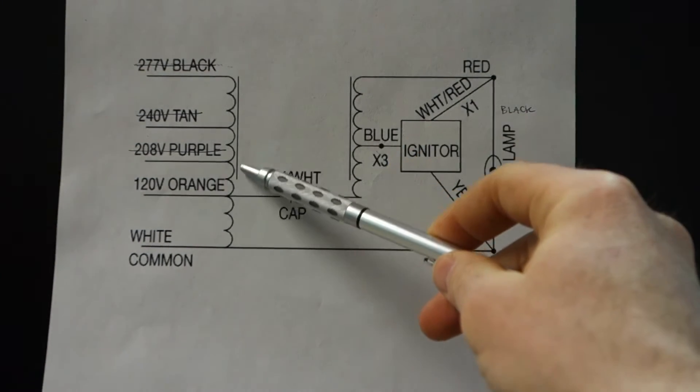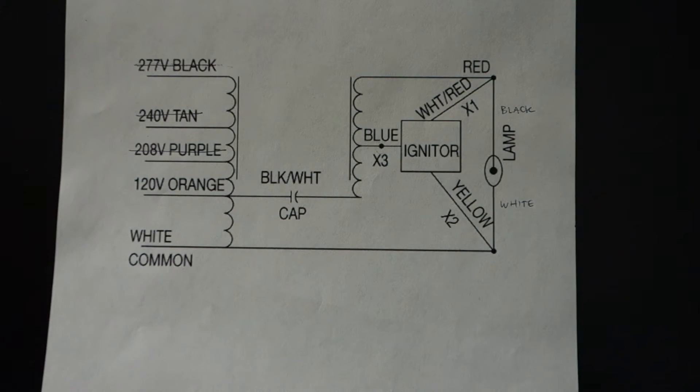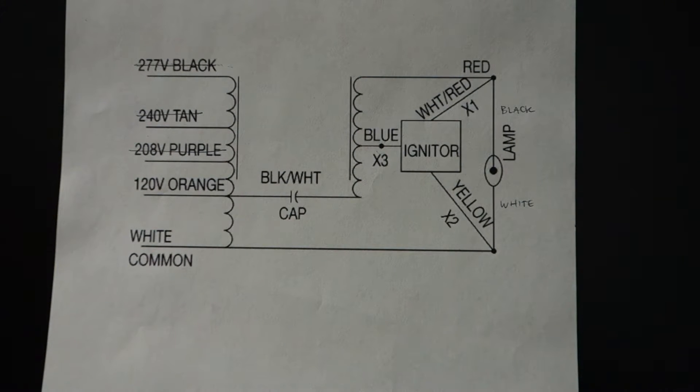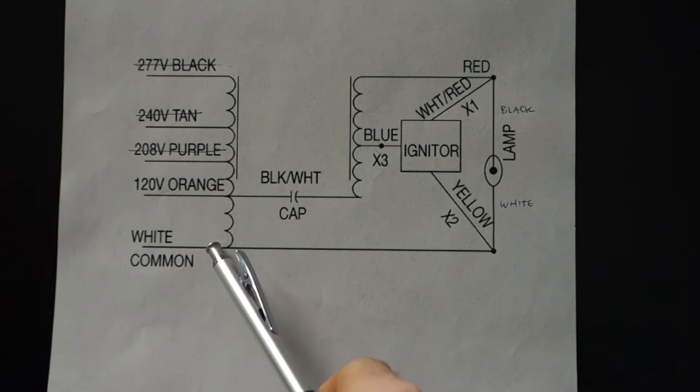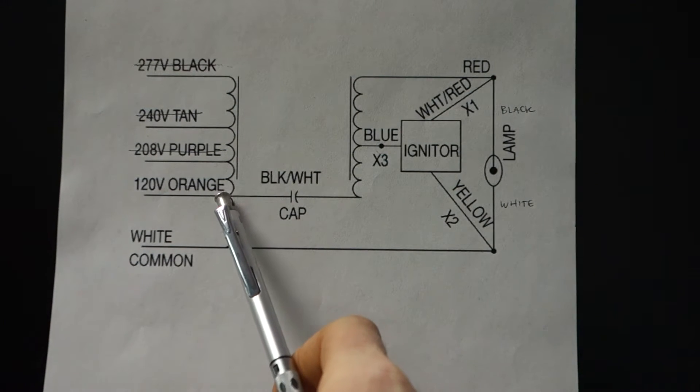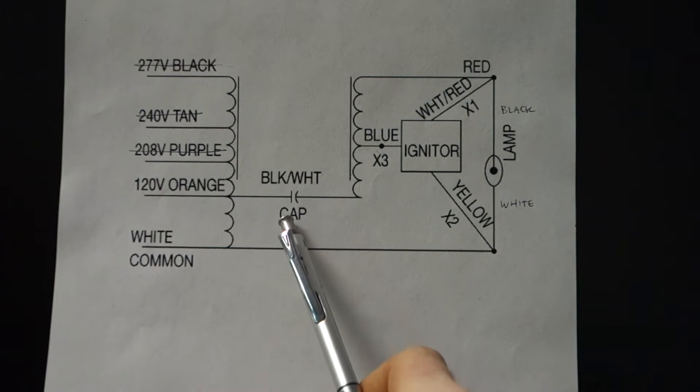This grouping of wires is the voltage, so you have four different options for running, whether you're running 120, 208, 240, or 277. For our purposes we're going to be using a standard 120 volt outlet, which is the orange wire, and then there's also a white common wire. Actually there are two white common wires coming off of here, and then there's a white black wire which connects into a capacitor.